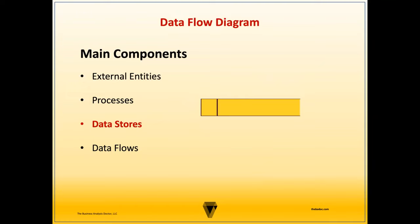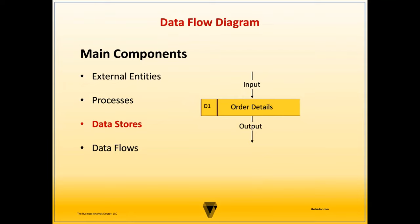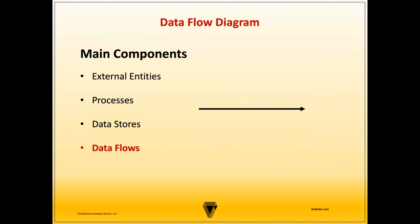Data stores model a repository for a collection of data at rest, and each must have input and output data flows. Data store labels must be a noun phrase, such as 'order details.' The Gane-Sarson notation also includes a unique identifier for the data store to distinguish multiple stores within the same diagram. A data flow is the representation of data or information moving between external entities, processes, and data stores — it will be an input, output, or both — and is always labeled as a noun, for example, 'sales order.'